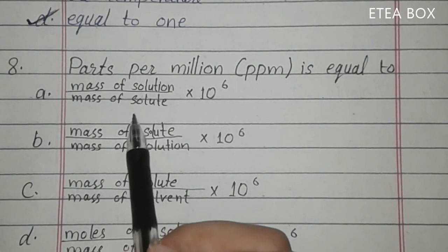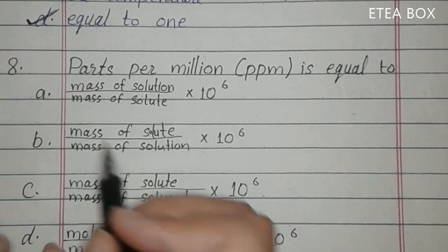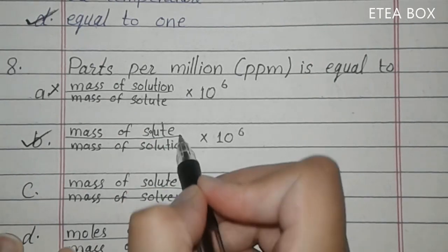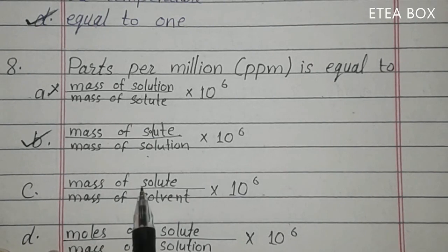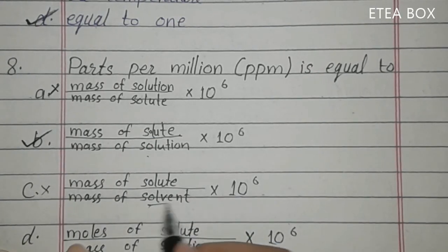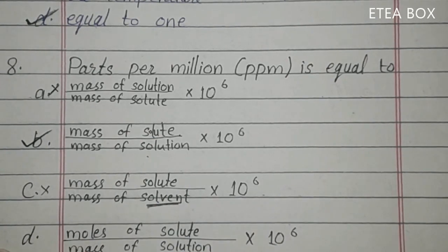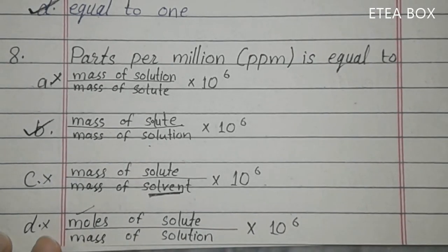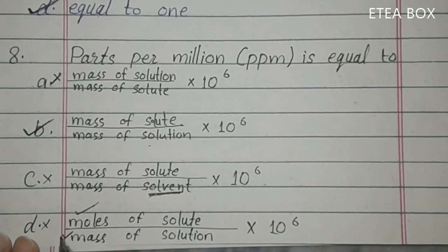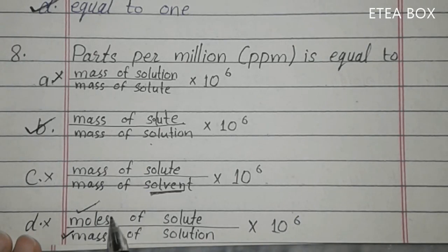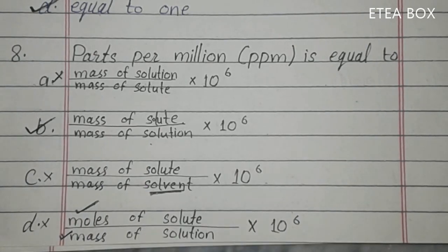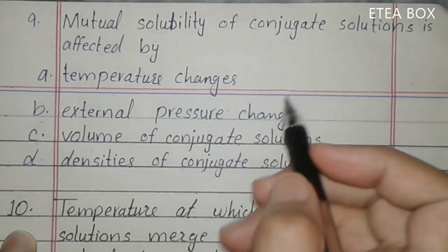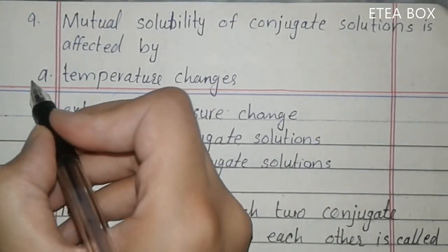Eighth MCQ: parts per million is equal to — option A (mass of solute divided by mass of solution divided by mass of solute) is incorrect. The correct formula is mass of solute divided by mass of solution — option B is correct. Option C (mass of solute divided by solvent) is incorrect because PPM uses solution not solvent. Option D (moles of solute divided by mass of solution) is incorrect because numerator and denominator must have the same unit.